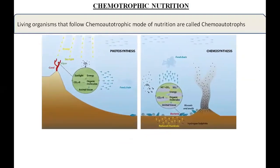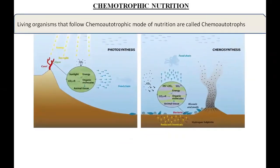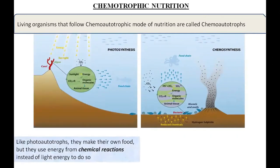The living organisms that follow the chemo-autotrophic mode of nutrition are known as chemo-autotrophs. Just like photo-autotrophs, they are also able to make their own food, but they use energy which comes from chemical reactions instead of light energy. Chemo-autotrophs are able to synthesize their own organic molecules from the fixation of carbon dioxide.